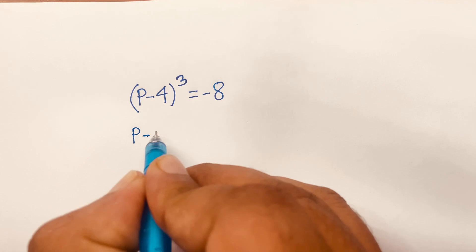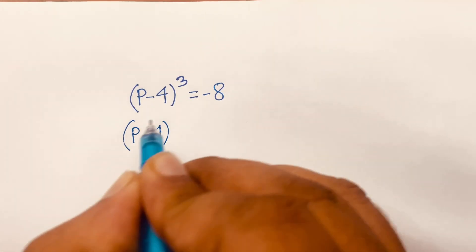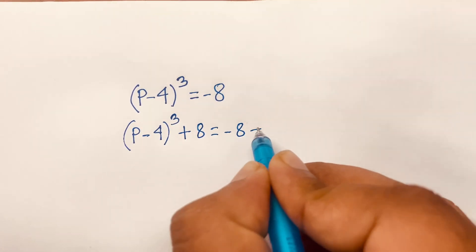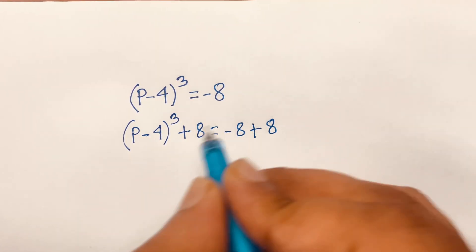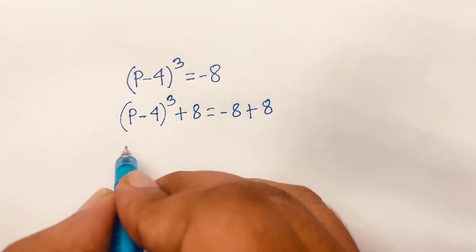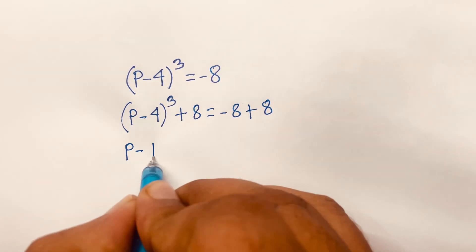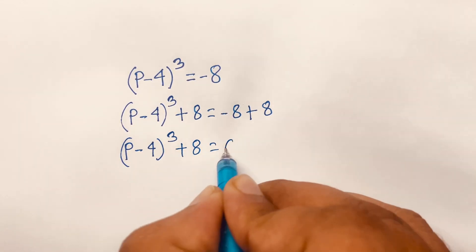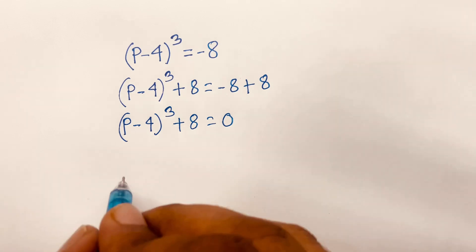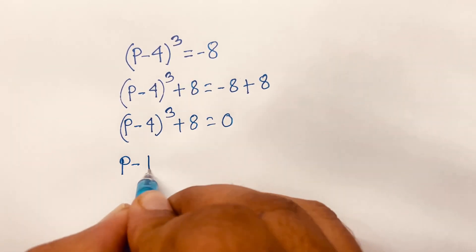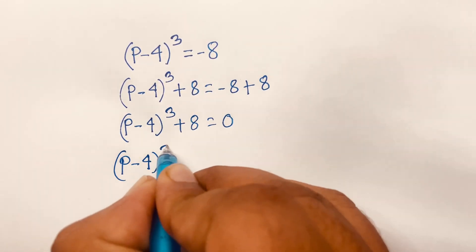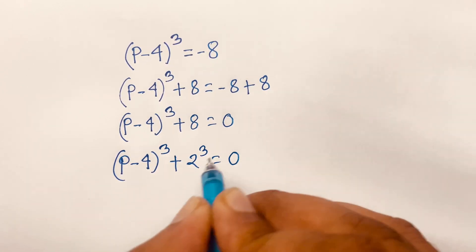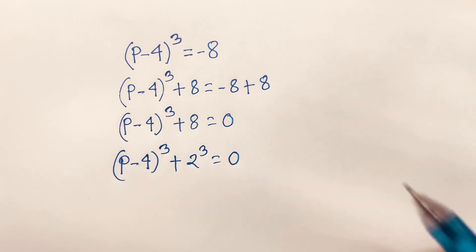First, I add 8 to both sides: (p minus 4)³ plus 8 equals minus 8 plus 8, which gives (p minus 4)³ plus 8 equals 0. We can rewrite this as (p minus 4)³ plus 2³ equals 0, since 2³ equals 8.